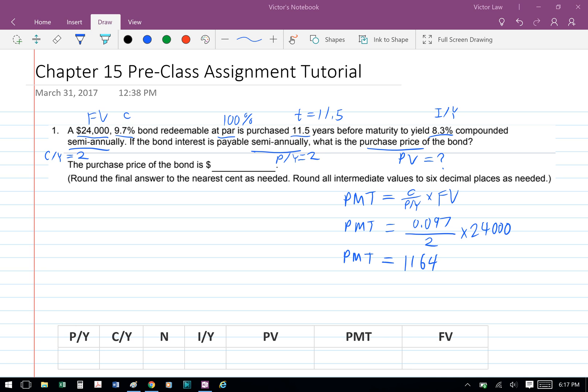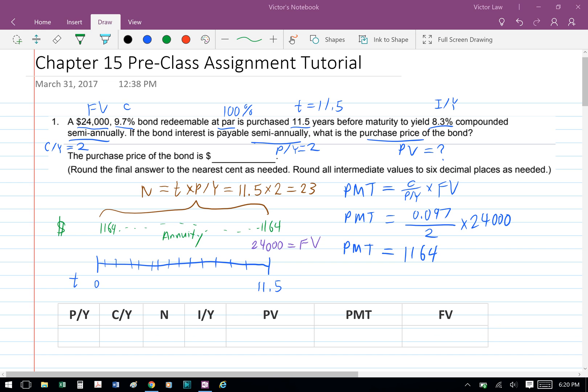To calculate PMT, we need to use the formula C divided by P/Y times FV. So we have 0.097 divided by 2 times 24,000, so we get PMT equals to 1164.